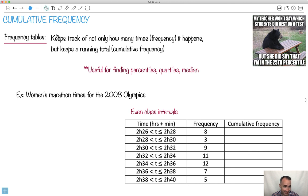So let's look at these frequency tables here. They keep track of not only how many times something happens, but also keep track of the total cumulative frequency. Cumulative means you keep track of the total frequency. Let me show you what I mean here.